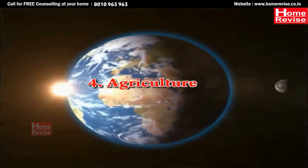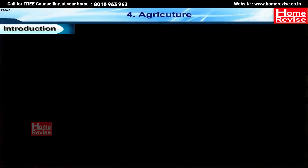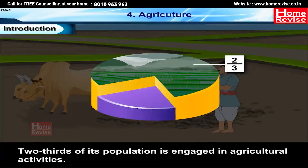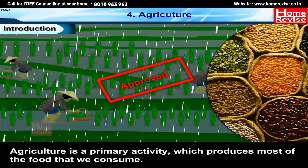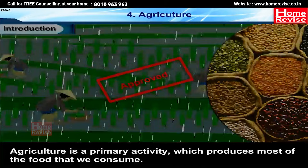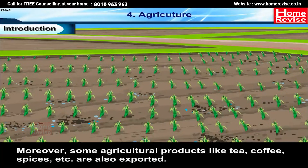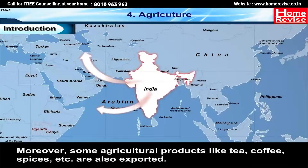India is an agriculturally important country. Two-thirds of its population is engaged in agricultural activities. Agriculture is a primary activity which produces most of the food that we consume. Besides food grains, it also produces raw material for various industries. Moreover, some agricultural products like tea, coffee, spices etc. are also exported.